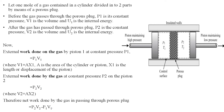A pressure applied on the first piston at high pressure pushes the volume v1 of gas through the porous plug. The volume v2 of gas then pushes the second piston outward at low pressure. Mathematically, external work done on the gas by piston one at constant pressure p1 is given as p1·v1, where v1 = a·x1 (area times displacement). Similarly, external work done by the gas on the second piston at constant pressure p2 is p2·v2, where v2 = a·x2. So the net work done by the gas passing through the porous plug is p2·v2 − p1·v1.